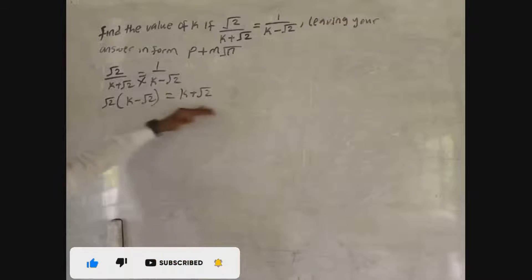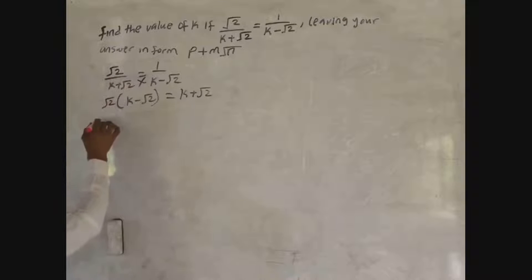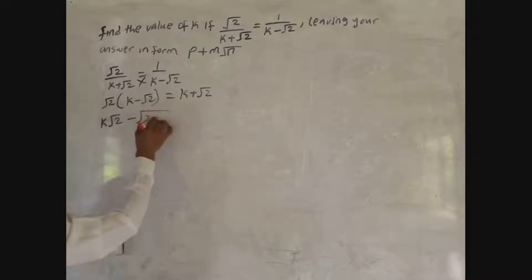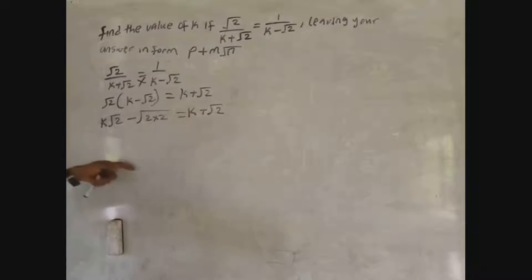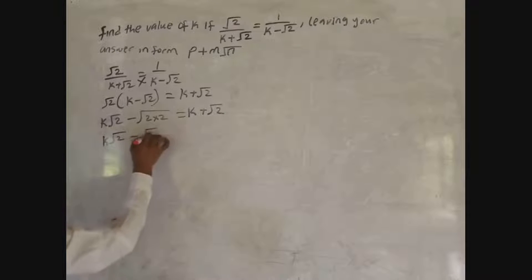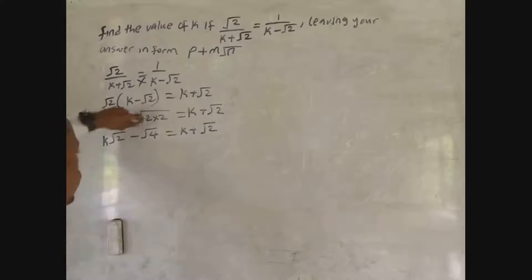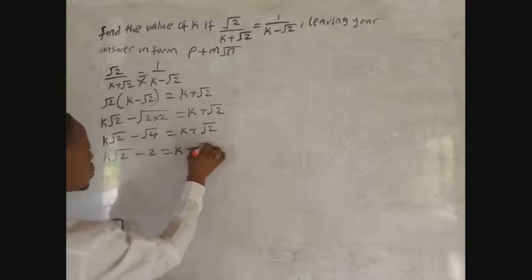Now let's expand the bracket. That is: √2 times k gives k√2, and √2 times √2 gives 2. So we have k√2 − 2 equal to k + √2.